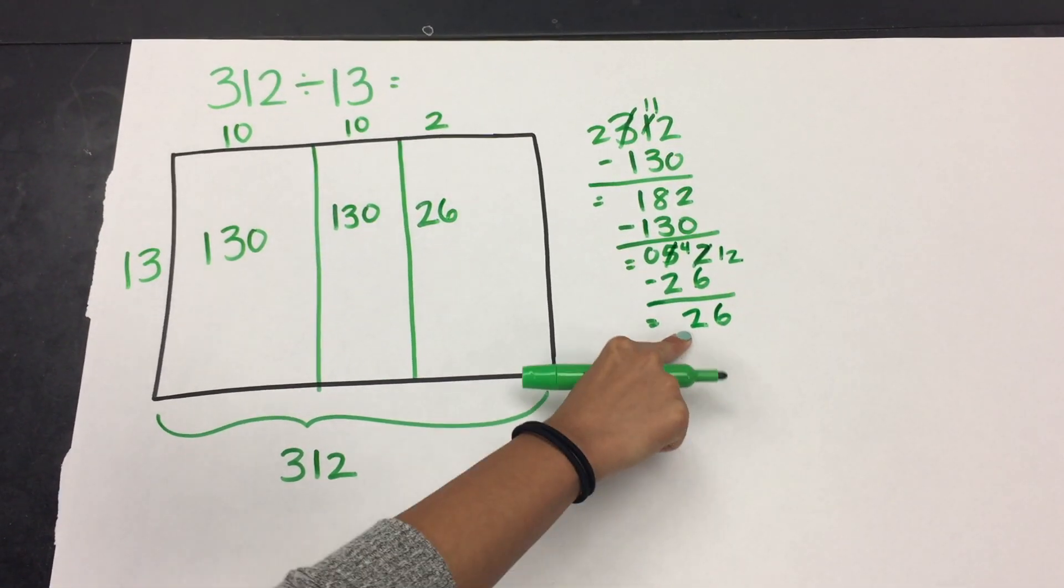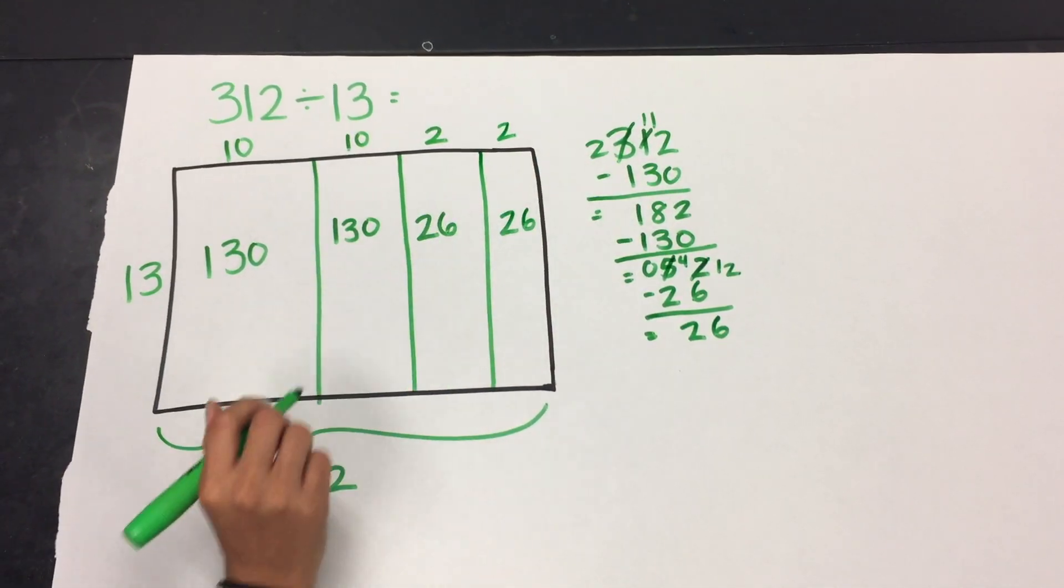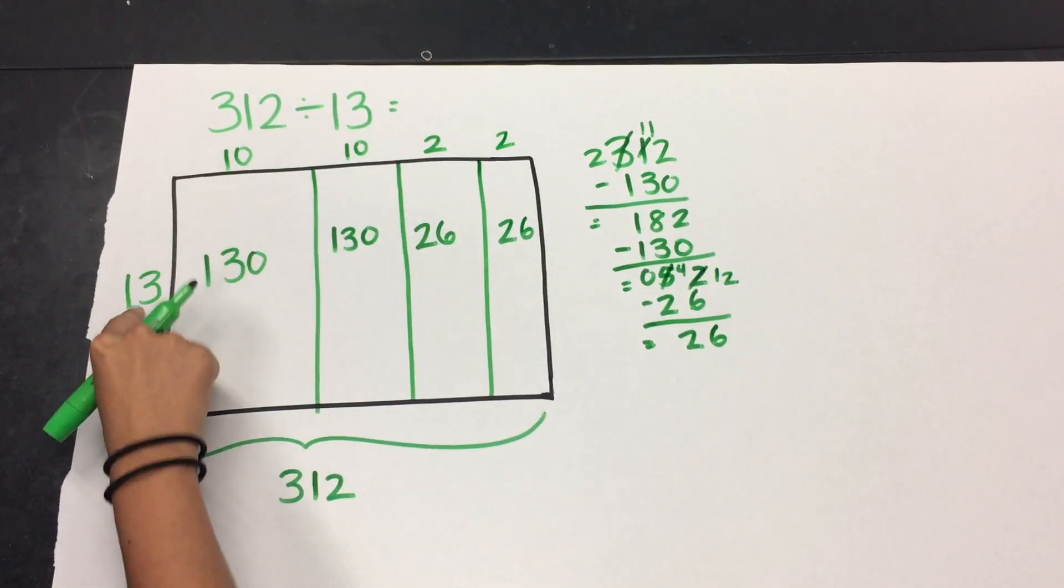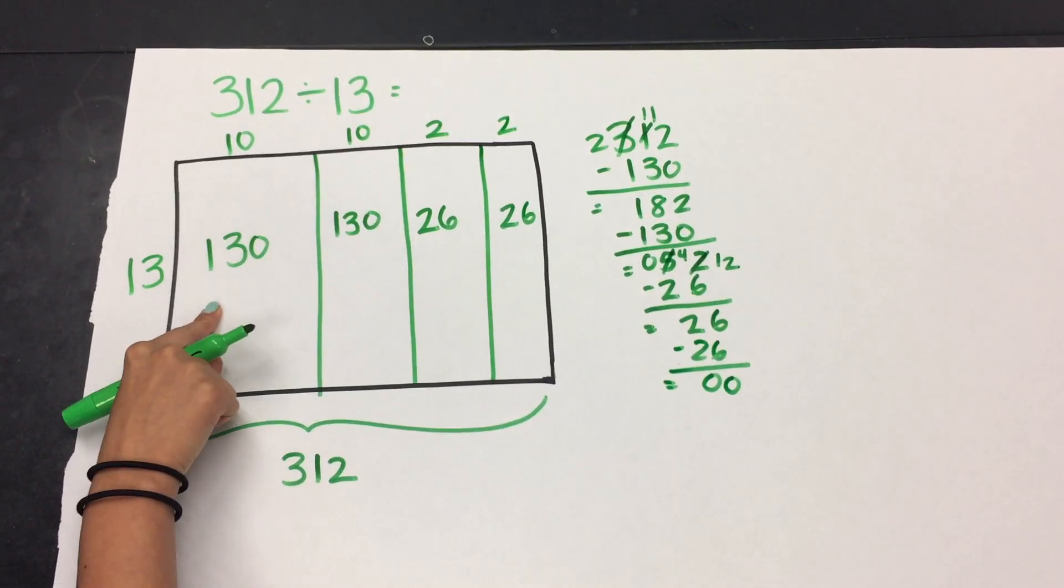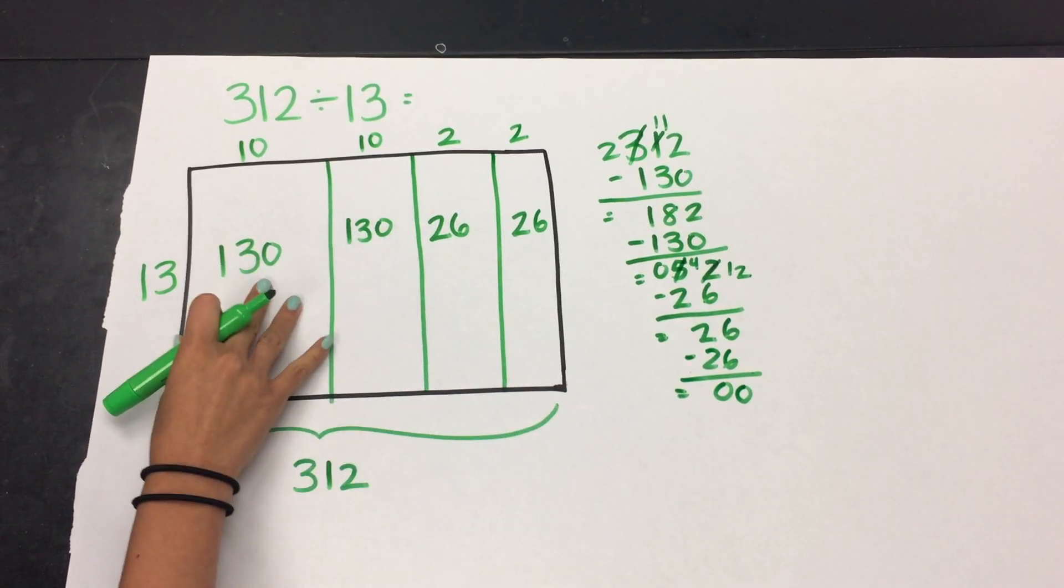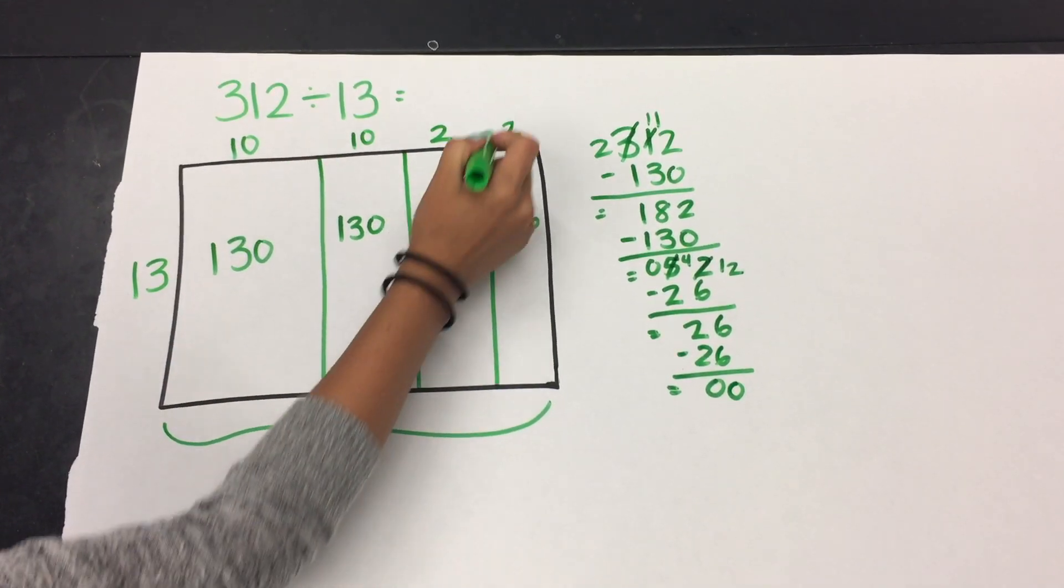And I see that my remaining amount is 26. So I'm going to take one last group of 2 groups of 13 so that I have a total of 312 in my area model. Now that I have 312 all together,